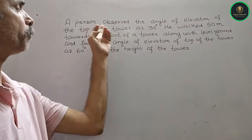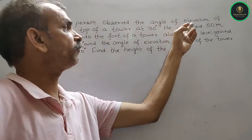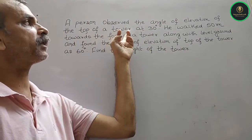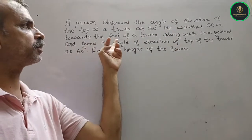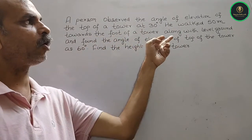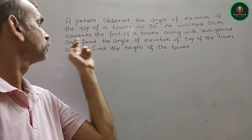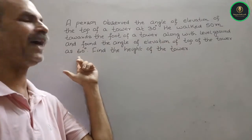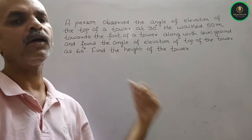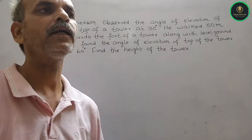A person observed the angle of elevation of the top of a tower at 30 degrees. He walked 50 meters toward the foot of the tower along level ground and found the angle of elevation of the top of the tower at 60 degrees. Find the height of the tower.